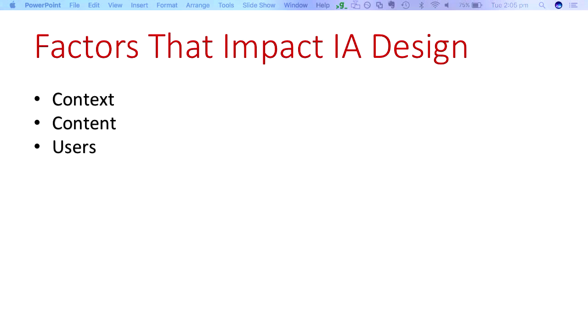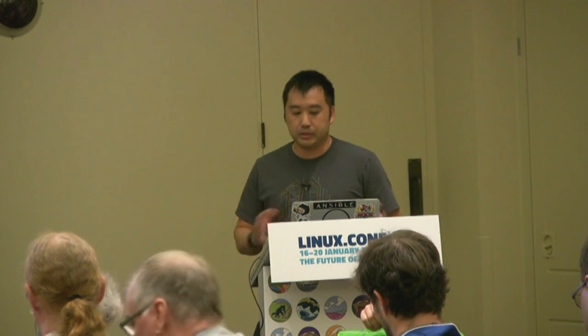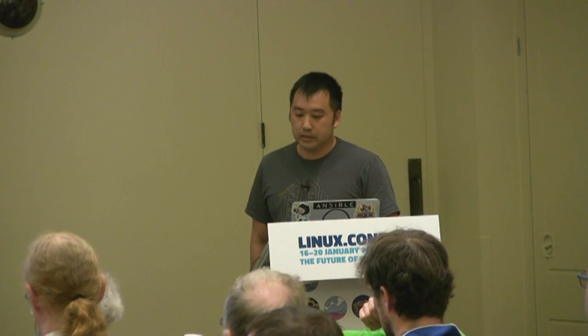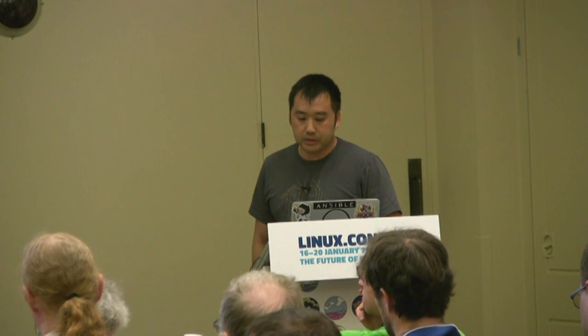When practising good IA design, there are three main factors to consider — and these are covered in more detail in a book called Information Architecture for the Web and Beyond, which I highly recommend. The first is context: taking into consideration business or organisational elements such as your business goals, your process, your budget, and culture. Then obviously it's your content, which is your structure, your data types, metadata, and all that sort of stuff that people use in your system.